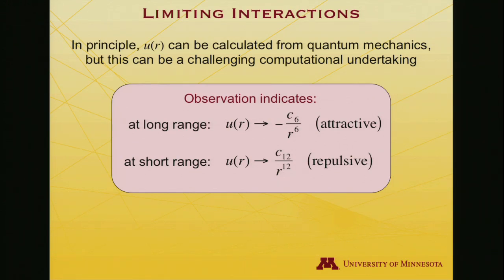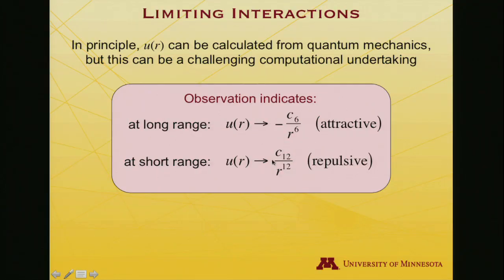Meanwhile, as they get closer and closer, sooner or later, these atoms with their clouds of electrons, the electrons start to interpenetrate these two clouds. That's a very bad situation. You get a whole lot of repulsion. That's why nuclear fusion doesn't happen spontaneously. That repulsion is observed to go up as roughly the twelfth power of the distance between the two species. I'll express that as a positive term, C₁₂ over R to the twelfth.